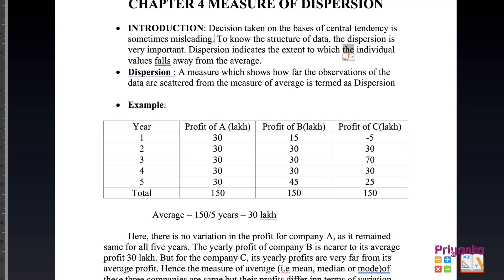We start with the introduction: decisions taken on the basis of central tendency are sometimes misleading. To know the structure of data, dispersion is very important. Dispersion indicates the extent to which individual values fall away from the average. Decisions taken based on central tendency — mean, median, or mode, which we covered in the last chapter — can be a mistake in that view.